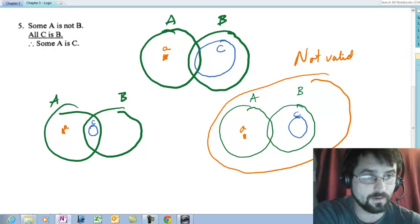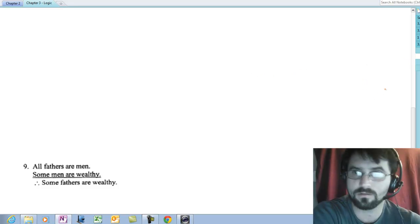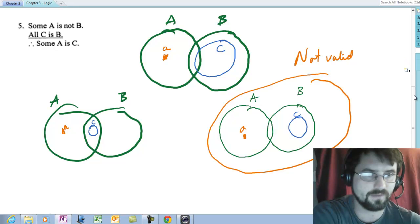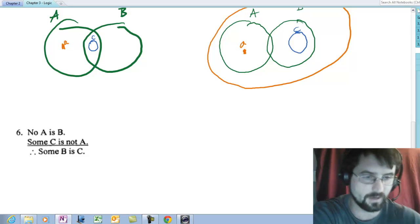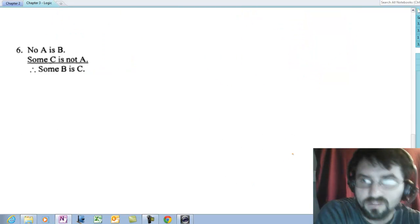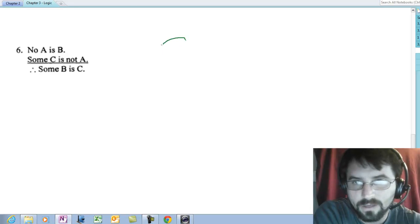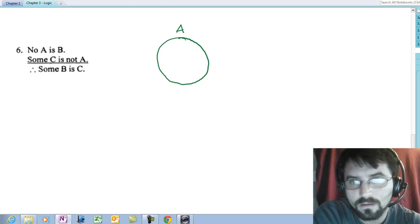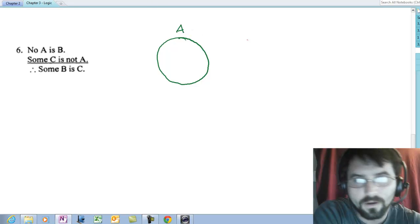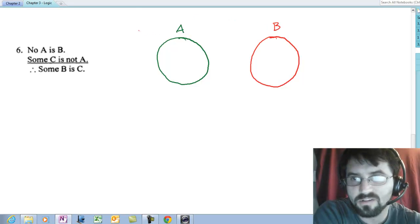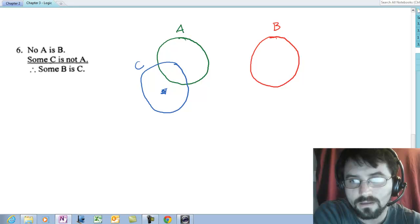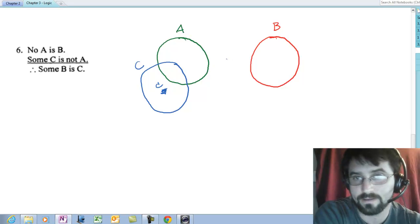Let's look at number six. It says no A is B. Here's A, here's B. They're disjoint. Some C is not A. So here's a C, and this one is not A.